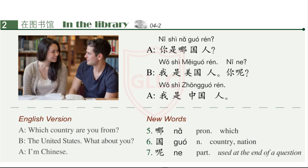Text 2 — 你是哪国人? 我是美国人，你呢? 我是中国人。 New words: 哪、国、呢。